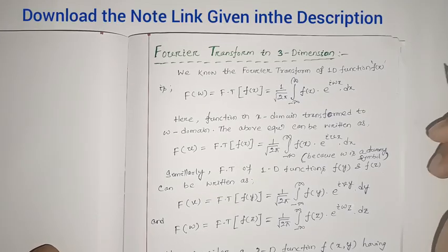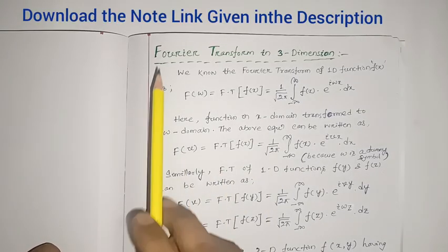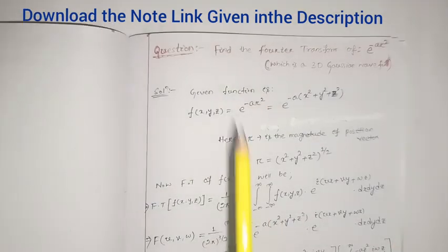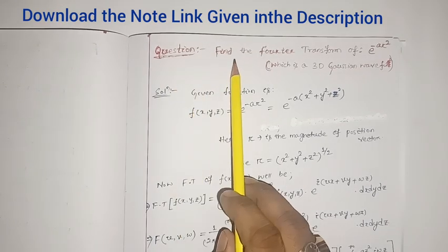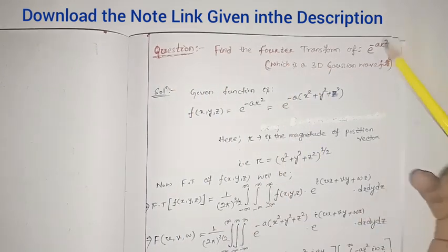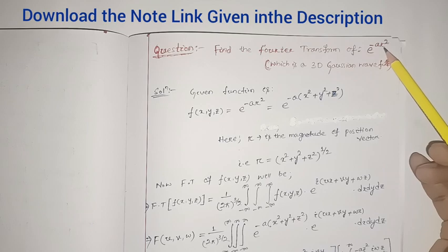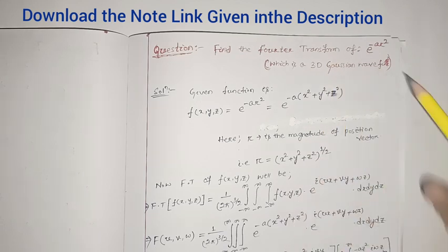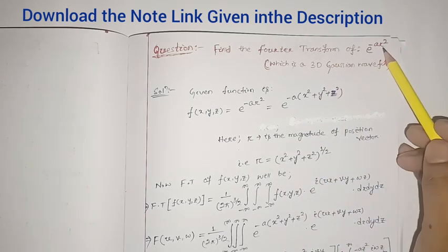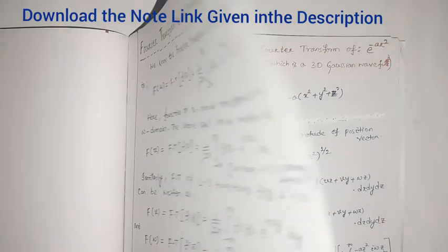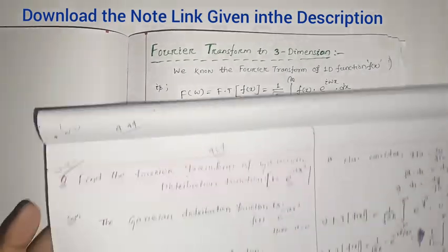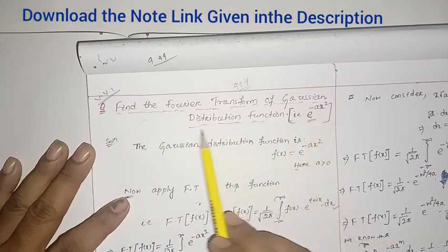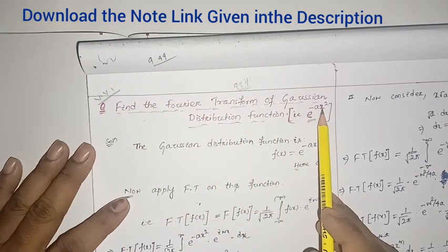Hello everyone. In this video we are going to discuss Fourier transform in three dimensions. One important question is: find the Fourier transform of e to the power minus a r squared, which is your 3D Gaussian wave function. Here r is the magnitude of the position vector. In our last class we discussed in detail the Fourier transform of the Gaussian distribution function, that is e to the minus a x squared, the 1D Gaussian distribution function.